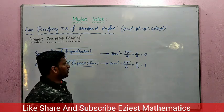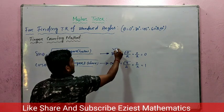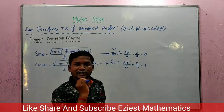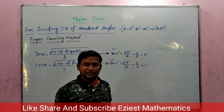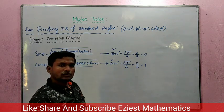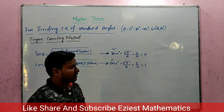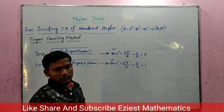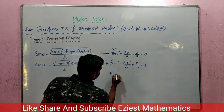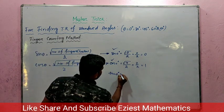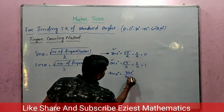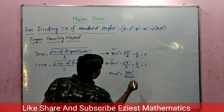Once we know the values of sin and cos, the remaining trigonometric ratio values can be found using the standard formulas. Suppose we want to find the value of tan 0 degree — we can calculate it as sin 0 divided by cos 0.